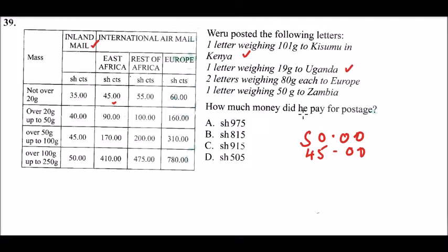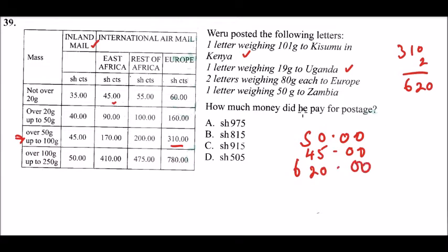Two letters weighing 80 grams each going to Europe. 80 grams lies in the relevant weight category, and for Europe, one letter costs 310 shillings. Multiply 310 by 2 and you get 620 shillings for both letters.